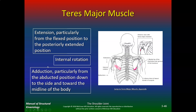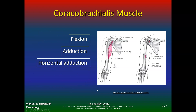Teres major does extension, particularly from the flexed to the posteriorly extended position, internal rotation, and adduction, particularly from the abducted position down to the side and toward the midline. Coracobrachialis does flexion, adduction, and horizontal adduction.